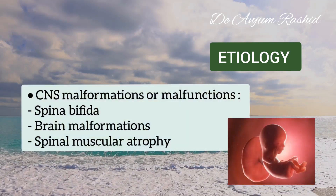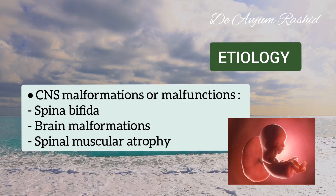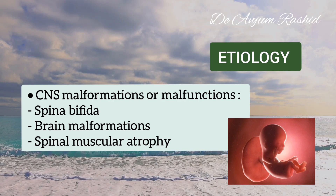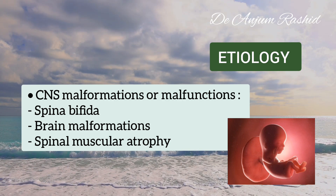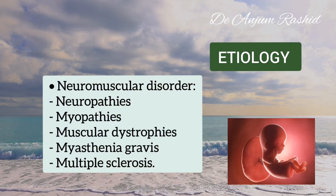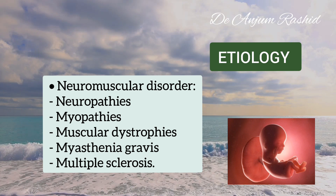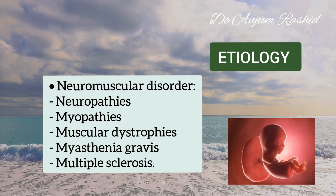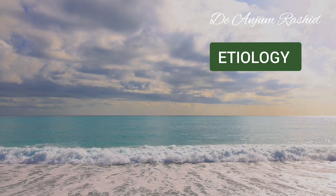Some causes of decreased fetal movement include malformations or malfunctions of the central nervous system such as spina bifida, brain malformation, or spinal muscular atrophy. Inherited neuromuscular disorders such as neuropathies, myopathies including muscular dystrophies, myotonic dystrophy, myasthenia gravis, or multiple sclerosis are also causes.